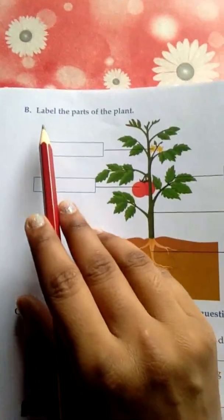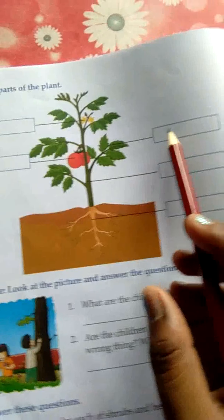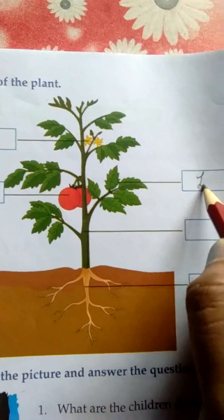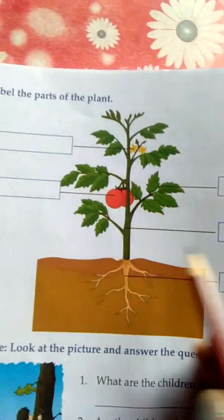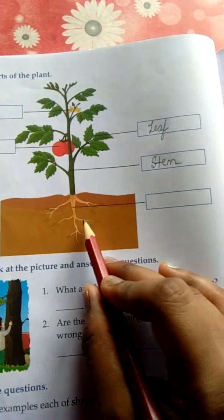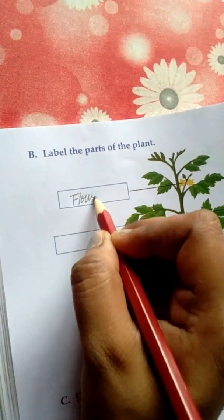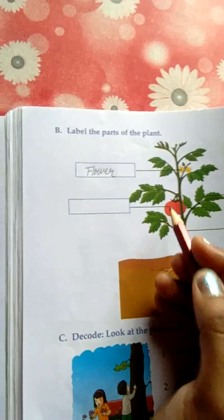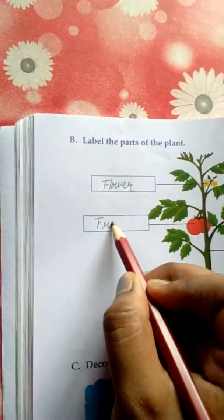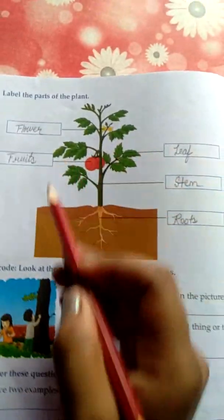Now turn your page. Number B — you have to label the parts of the plant. You can see the diagram of a plant and you have to mention the names of each part. This is a leaf, this is a stem, these are roots, the yellow one is a flower, and this red one is a fruit. Plants give us fruits.